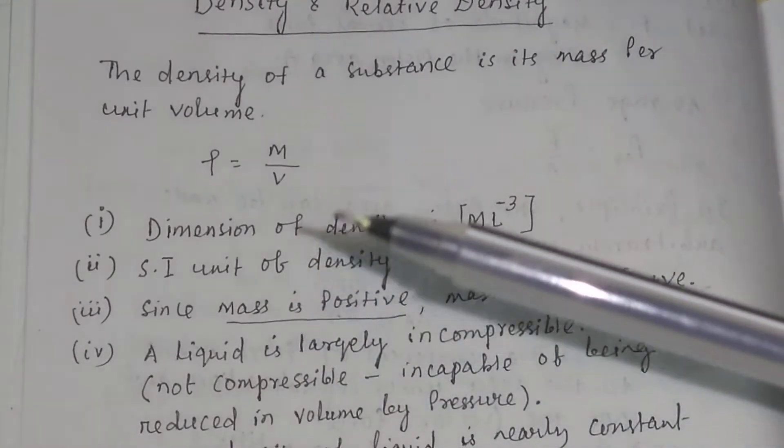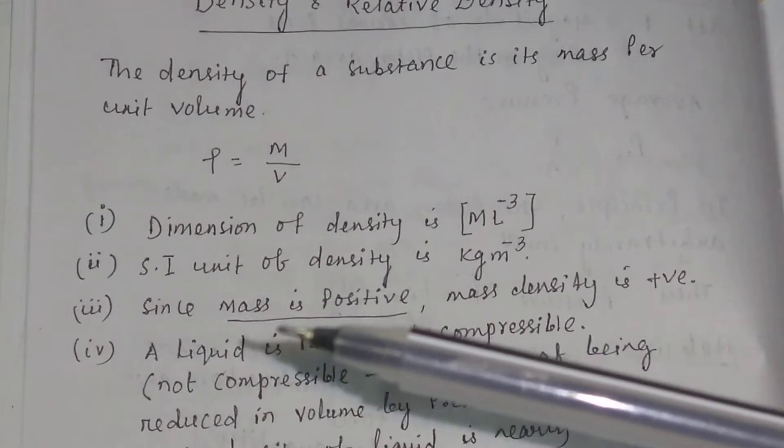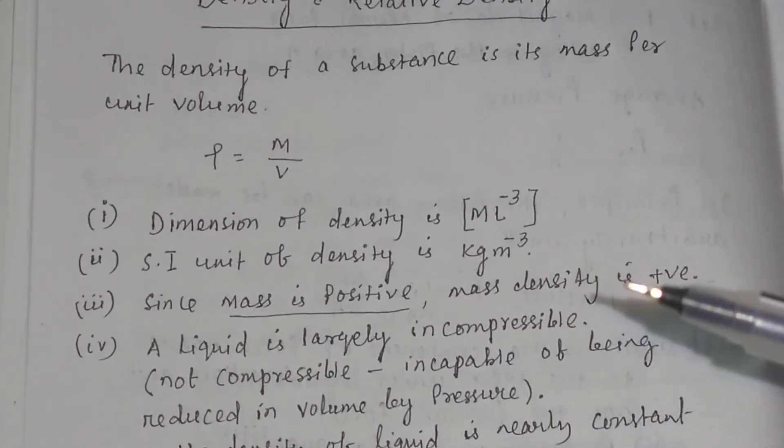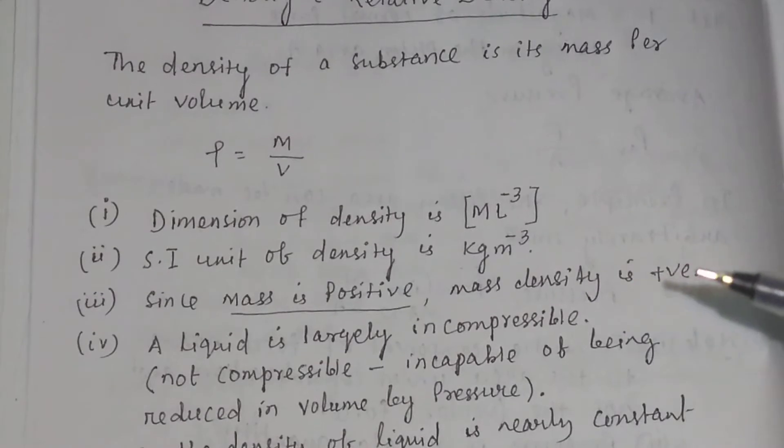Density is generally taken as positive because mass is positive. So mass density we generally take it as positive.